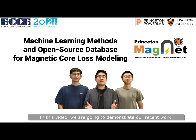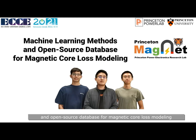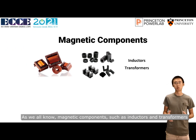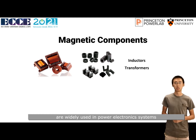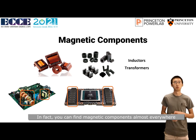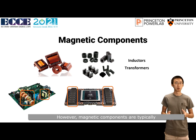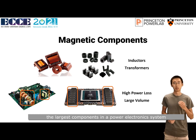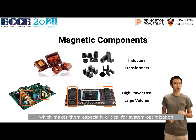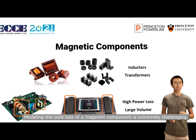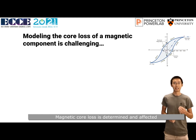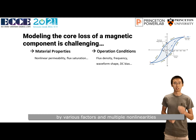In this video, we are going to demonstrate our recent work on a machine learning method and open-source database for magnetic core loss modeling. As we all know, magnetic components such as inductors and transformers are widely used in power electronics systems, from solar inverters to modern GPU accelerators. You can find magnetic components almost everywhere. However, magnetic components are typically the largest components in a power electronics system and are usually afflicted by significant power loss, which makes them especially critical for system optimization. Modeling the core loss of a magnetic component is extremely challenging, as magnetic core loss is determined and affected by various factors and multiple nonlinearities.